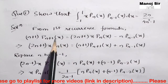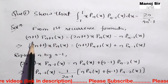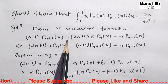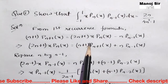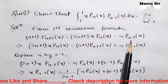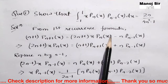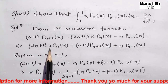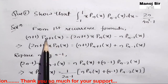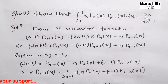Here we need to use the first recurrence formula, that is: n(n+1)Pₙ₊₁(x) = (2n+1)·x·Pₙ(x) − n·Pₙ₋₁(x). Rearranging, we get: (2n+1)·x·Pₙ(x) = (n+1)·Pₙ₊₁(x) + n·Pₙ₋₁(x).